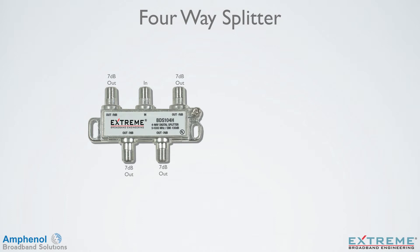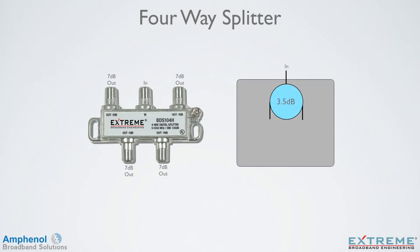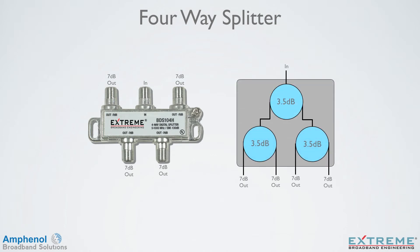On the left is a four-way splitter, with all legs losing 7 dB. With the three-way splitter, we saw that the 7 dB ports were made up of two two-way splitters, one feeding the other. So a four-way splitter is made up of one two-way splitter, and its two output ports each feeding an additional two-way splitter, for four ports with 7 dB of loss each.